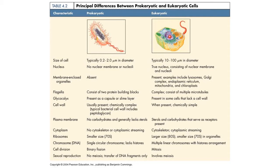Here is a very good table from Pearson's Education book that specifies all these points nicely. First is cell size: in prokaryotes, the cell size is 0.2–2 micrometers in diameter, while in eukaryotes it is between 10 to 100 micrometers. Regarding the nucleus: no nuclear membrane or nucleolus is present in prokaryotes, but eukaryotes have a true nucleus consisting of a nuclear membrane and a nucleolus in the center.